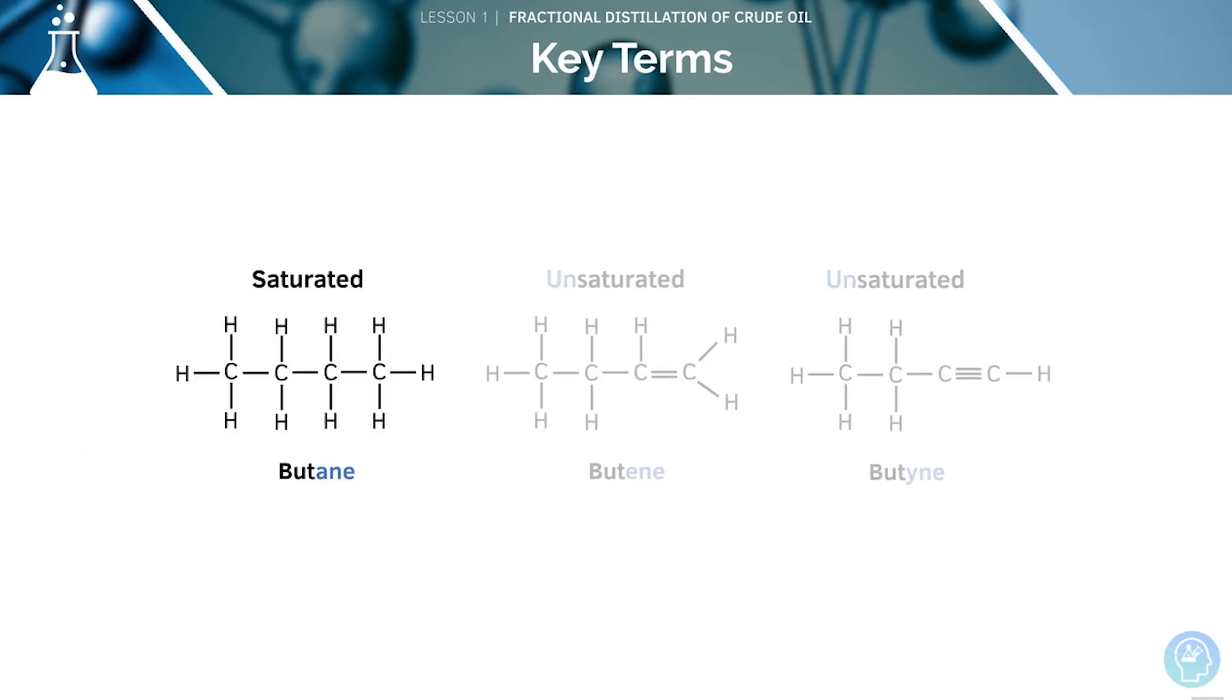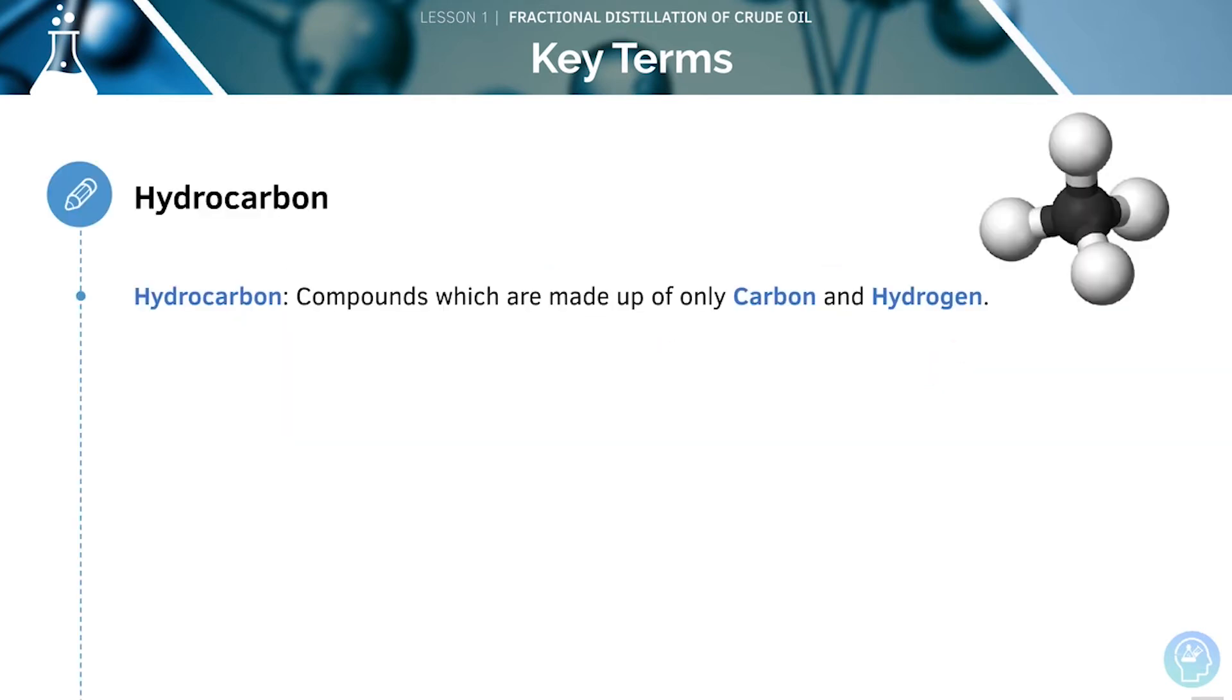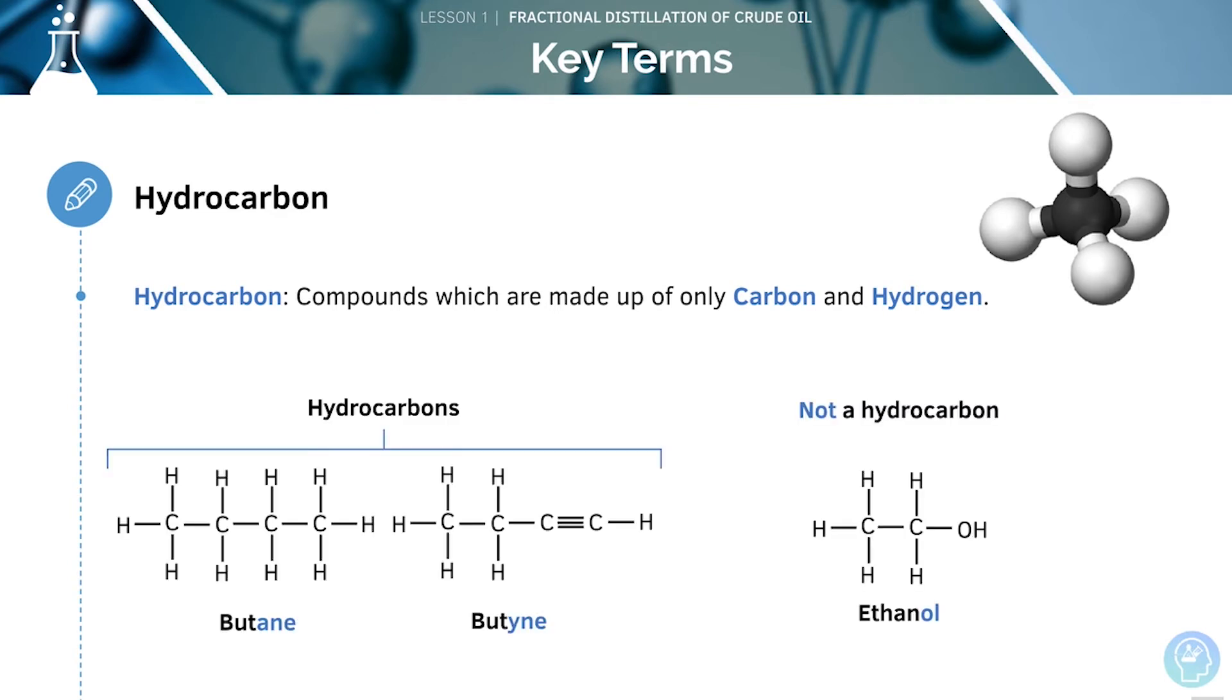As you can see, saturated compounds have single bonds, whereas unsaturated compounds have double bonds. Hydrocarbons are compounds that only consist of carbon and hydrogen. Here, we can see that butane and butene are hydrocarbons, whilst ethanol is not a hydrocarbon.